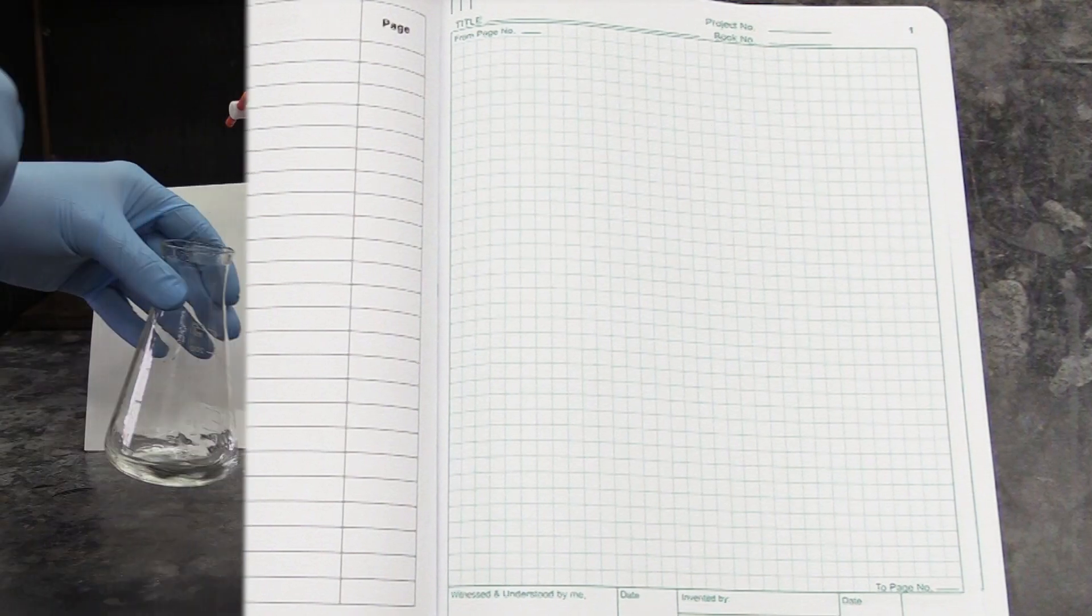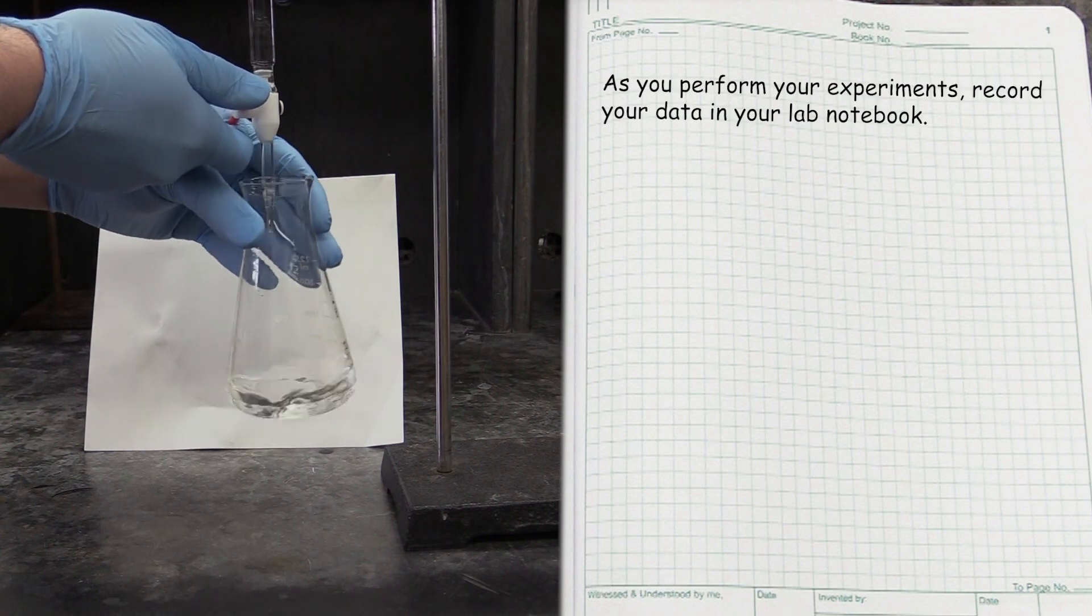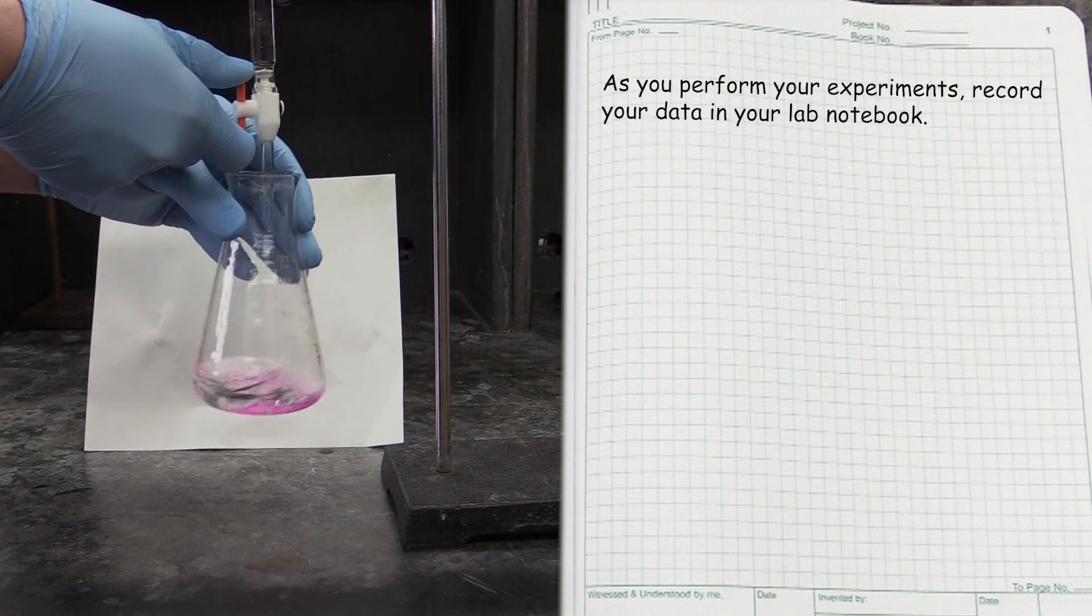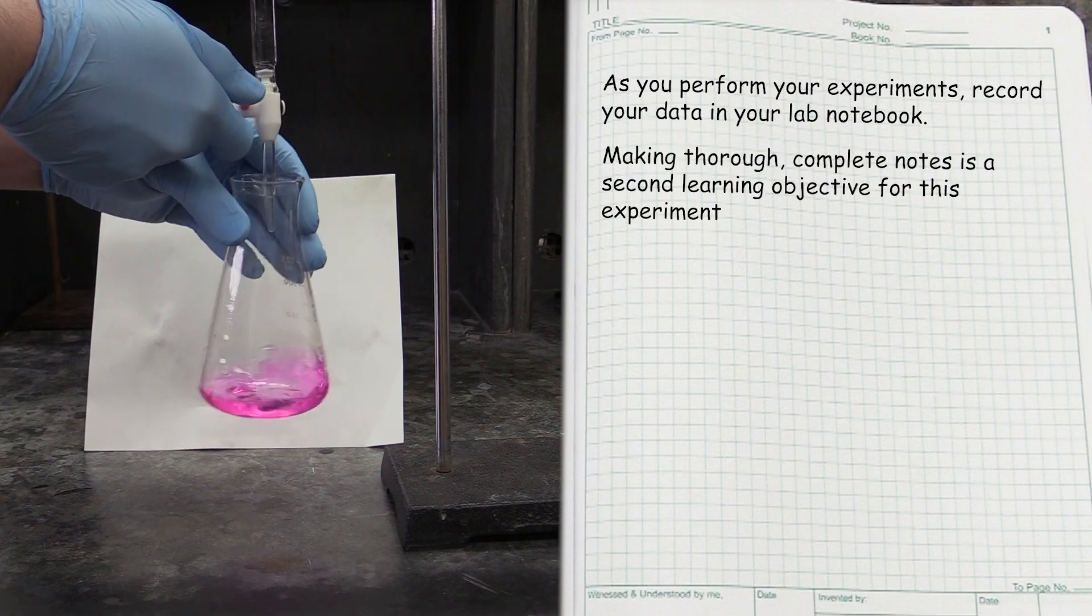Once your coat and goggles are on, it will be time to start your experiments. As you perform them, you will need to record your observations in your lab notebook. And this brings us to another of the learning objectives of this experiment, making thorough observations and taking complete notes.